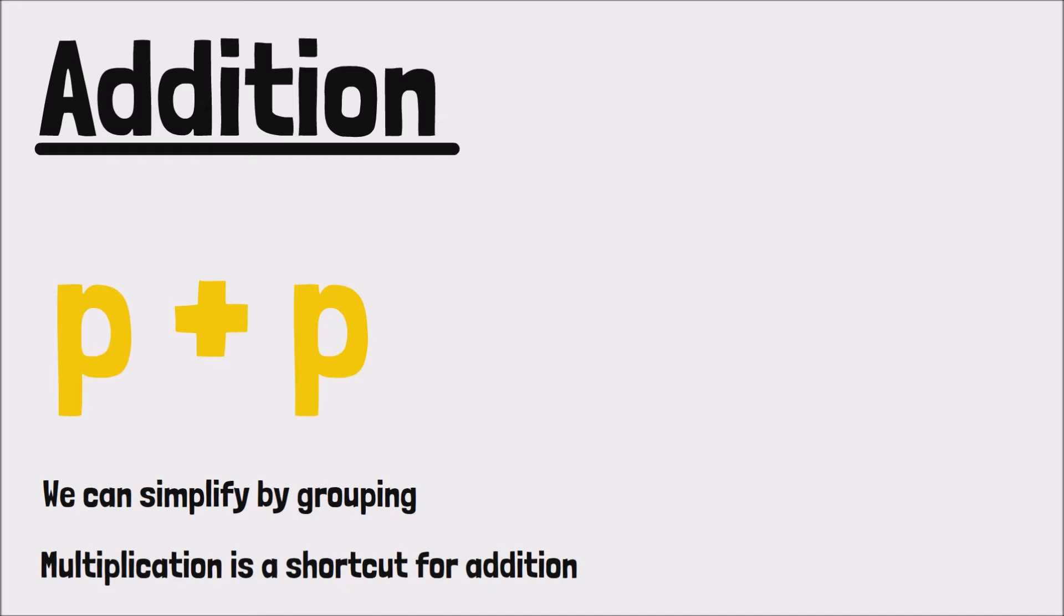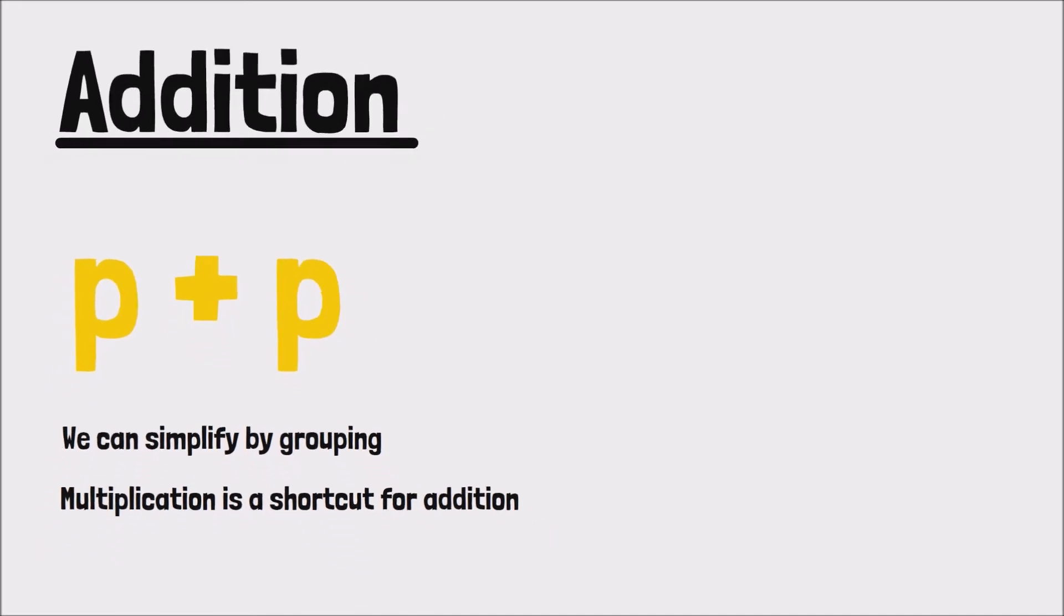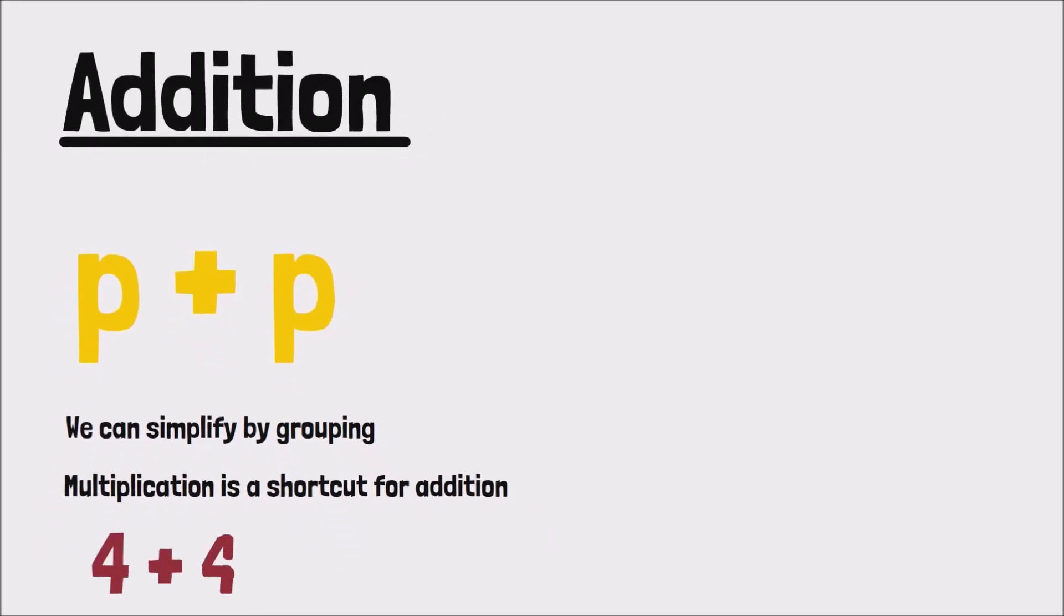So if we had 4 being added 2 times, we could shortcut it by saying 2 times 4 or 4 times 2. Those are actual numbers. Here we have the same term P being added 2 times, and so we write this as 2 times P or P times 2. But I think I also mentioned that usually we always write the known number first and the unknown variable beside it.